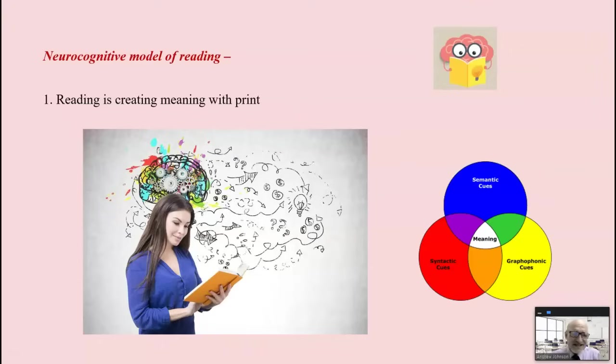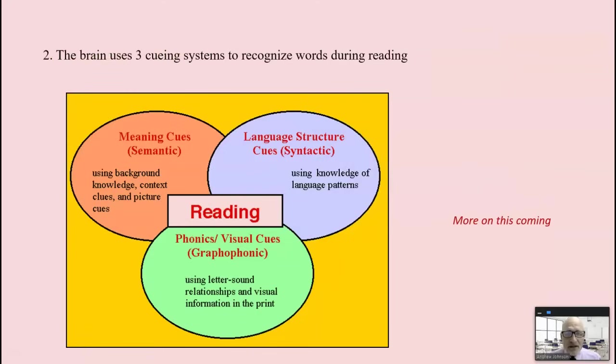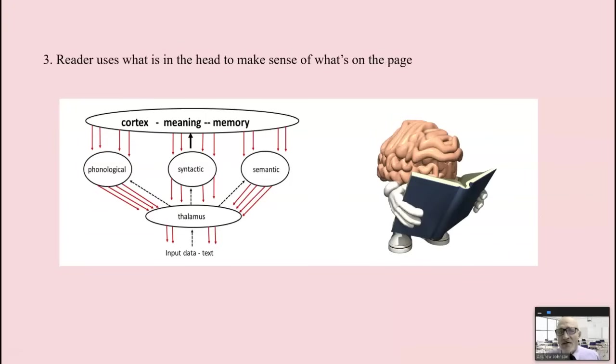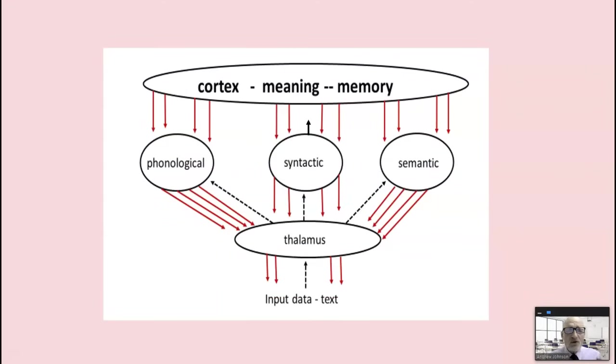According to this model, reading is not simply sounding out words. It's creating meaning with print. The brain is creating meaning without meaning. You are not reading. You are simply responding to stimuli. The brain uses not one cueing system, not just phonics, but three: semantics, background knowledge, and syntax. And the reader uses what is in his or her head to make sense of what's on the page. What is in the head is incredibly important in creating meaning. And that's what reading is. Creating meaning with print.